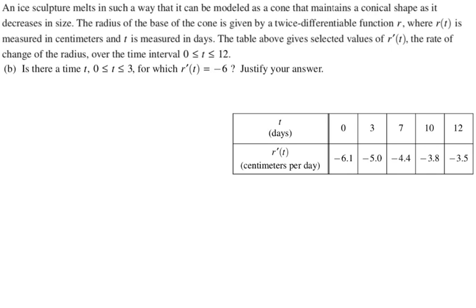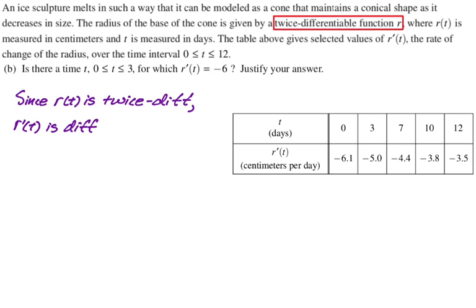I need to establish that r prime is continuous. They gave us that information indirectly by telling us that r is twice differentiable. So I'm going to say, since r is twice differentiable, that means that r prime is differentiable. And if r prime is differentiable, it is therefore continuous. So I've established that r prime is continuous, which means intermediate value theorem applies.